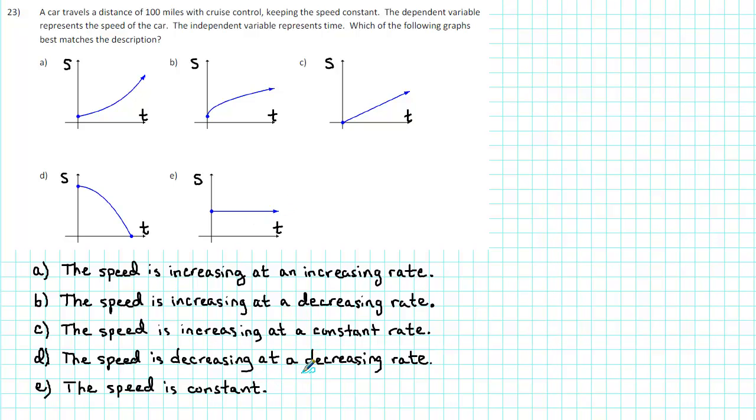So which of the following graphs best matches the description? Well, the description says that the car travels a distance of 100 miles with cruise control, keeping the speed constant. So E is the correct answer. The speed remains constant.